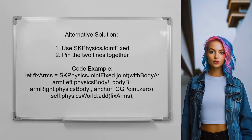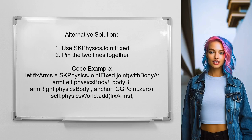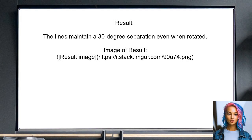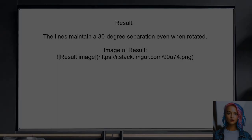An alternative solution to maintain a 30-degree angle between your two lines is to use an SKPhysicsJointFixed. This joint pins the two physics bodies together in a fixed position. Simply add this code where you have your other joints. This method ensures that the lines remain exactly 30 degrees apart even when they rotate. Here's the result of implementing this solution.